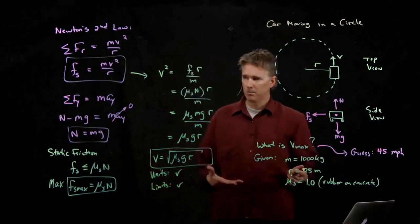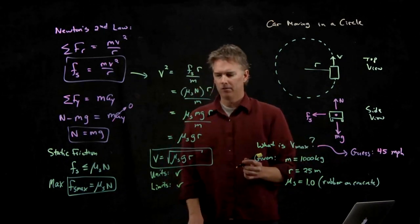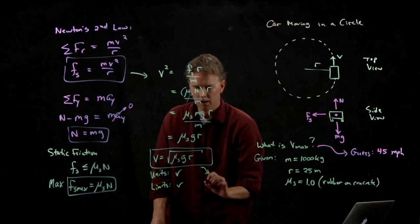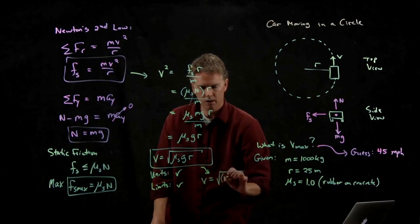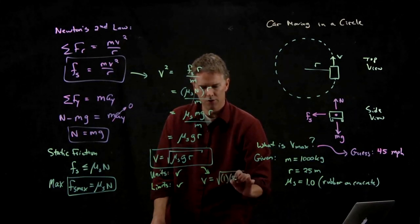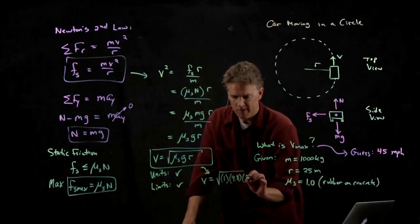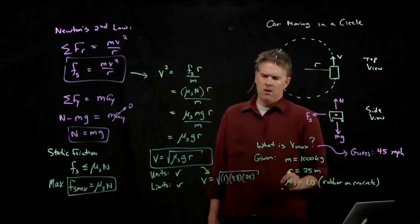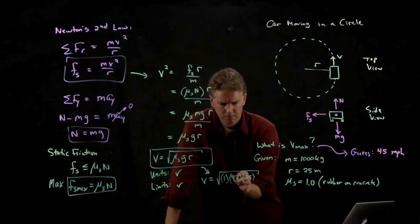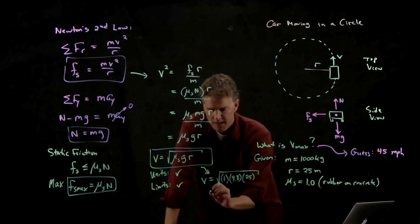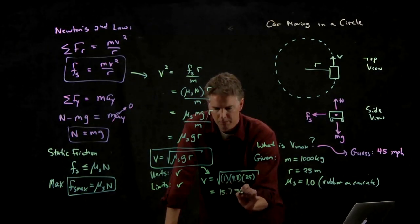So let's plug in some numbers and let's calculate what we get and see if we're even close to our guess. So V is equal to square root of mu s, which is 1, G, which is 9.8, R we said was 25. It's 15.7 and the units are meters per second.